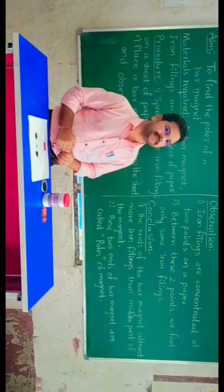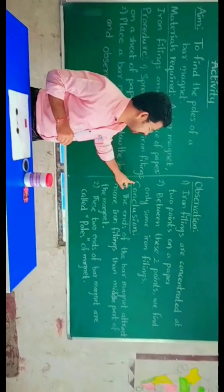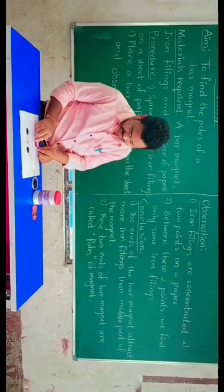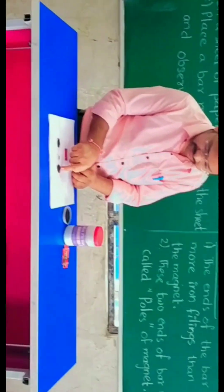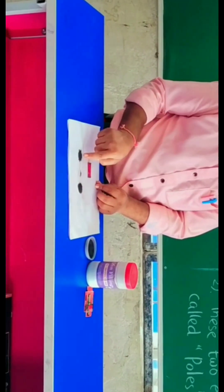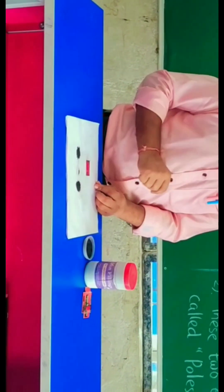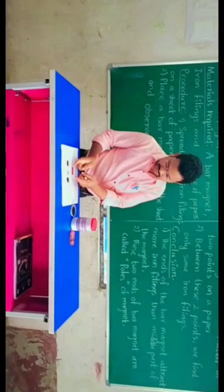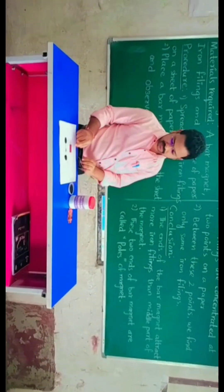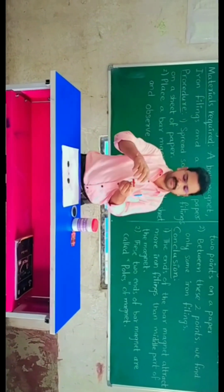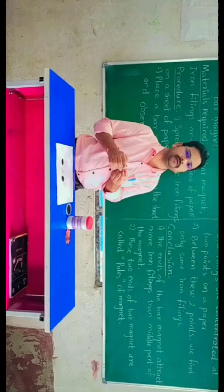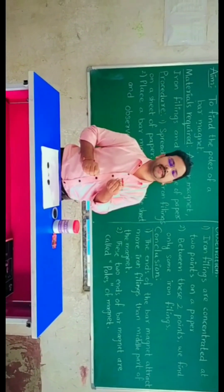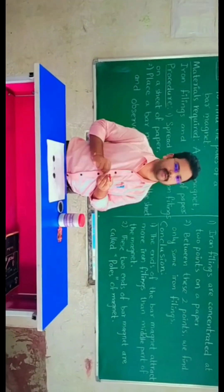By this activity, what can you observe? See the conclusions. The ends of the bar magnets attract more iron filings than the middle part of the bar magnet. By this, we can see that these two ends of a bar magnet are called the poles of a bar magnet. These poles have higher attracting power than the middle part of the bar magnet.